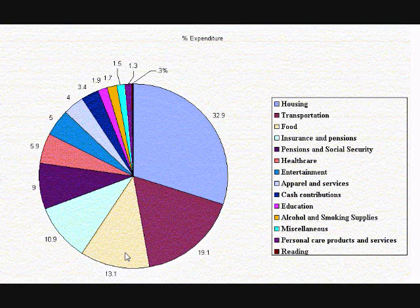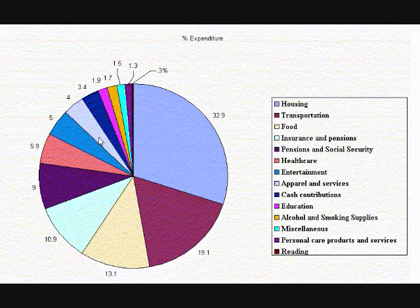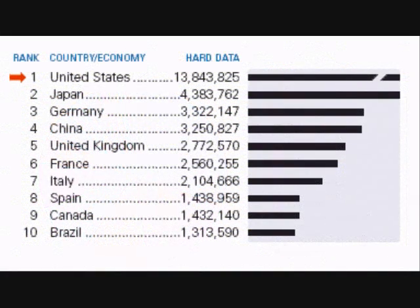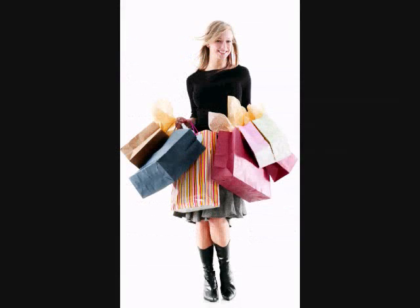The GDP breakdown shows about 20% transportation, 13% food, about 11% insurance premiums and pensions, about 9% Social Security, 6% health care, and the rest is entertainment, apparel, services, cash contributions, education, alcohol, smoking supplies, personal care products, reading, and other miscellaneous items. Here in the United States we have the largest GDP in the world by far — in fact, we are about three times as big as Japan and four to five times as big as Germany, the third largest.